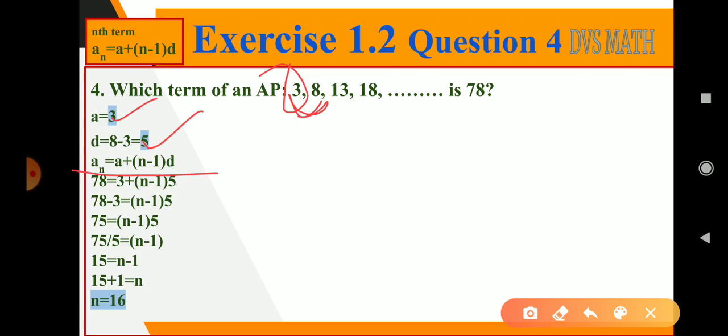So an, we know the value of that place, but we don't know its position - is it 10th place or 20th term or like that. So let us substitute: an is 78, a is 3, let me take n minus 1 as it is, 5.